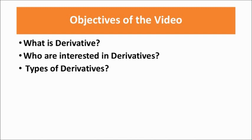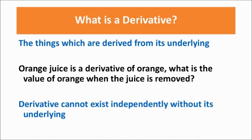First, let us understand what is a derivative. A derivative is something which is derived from the underlying, which means a derivative cannot exist independently. In simple words, we can say an orange juice is a derivative of orange, which means orange juice can't be derived without an orange. The orange basically contains three elements: the juice, the pulp, and the skin.